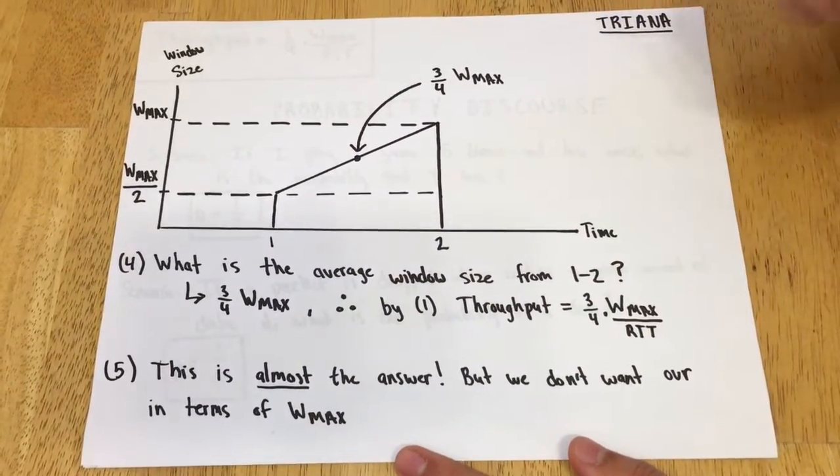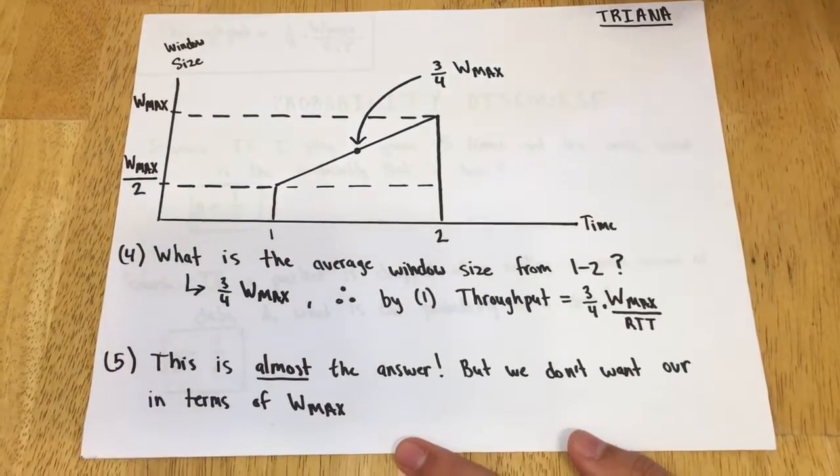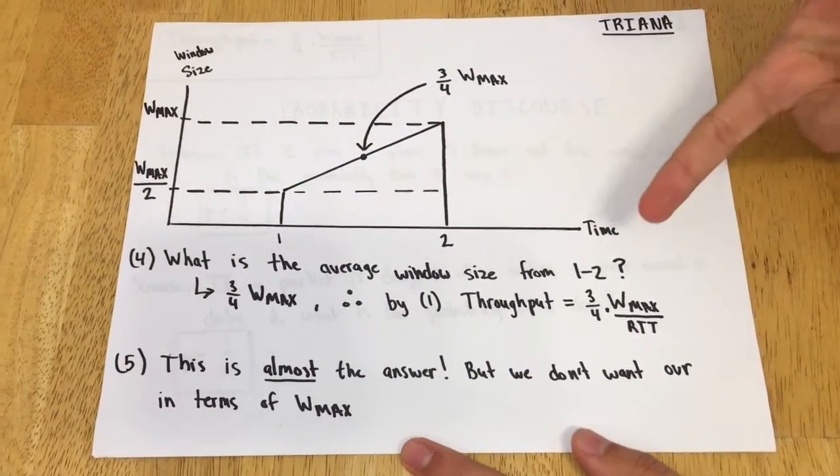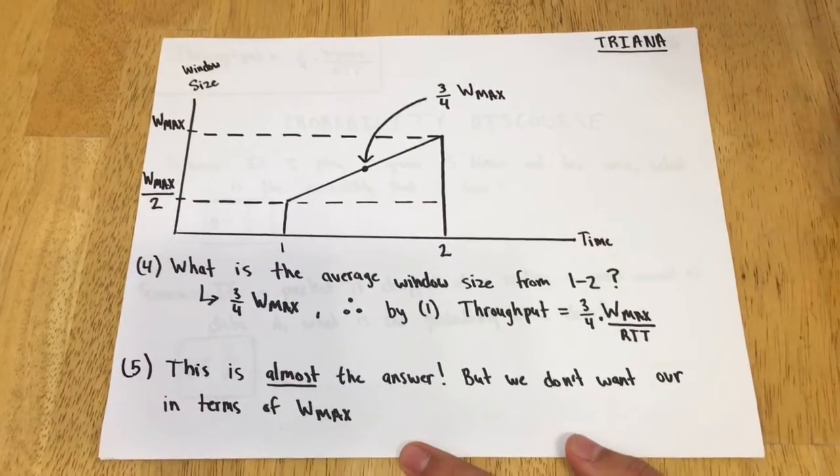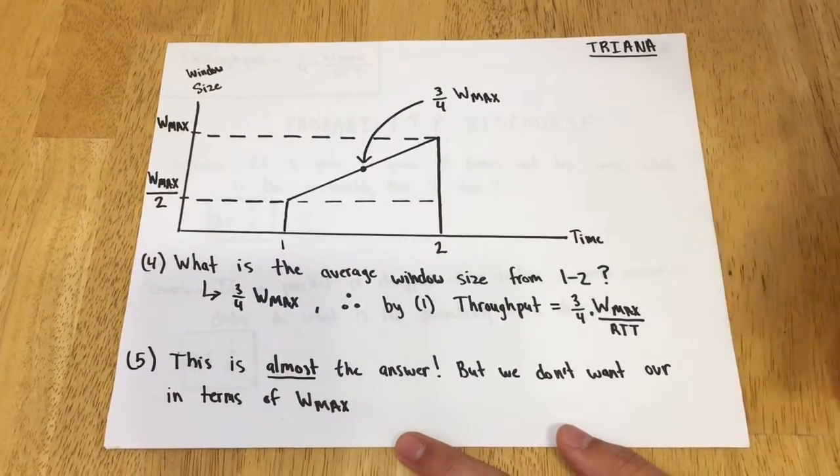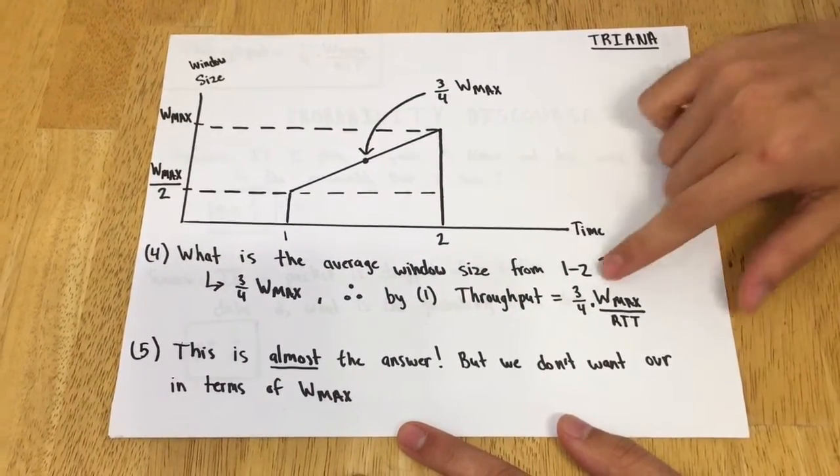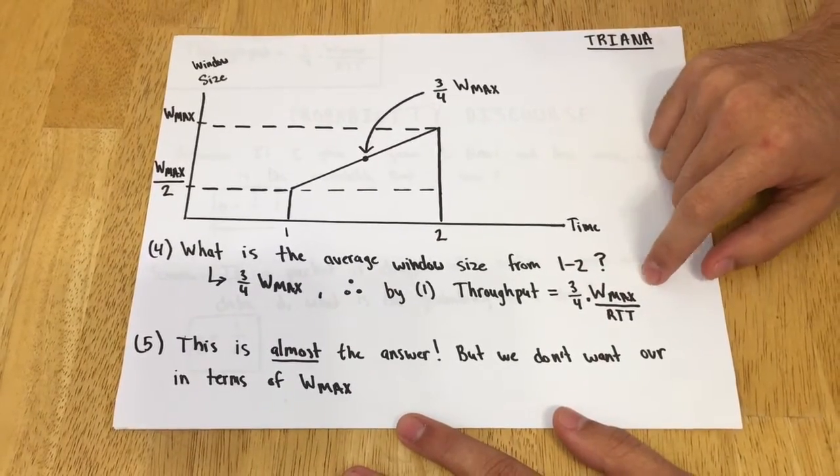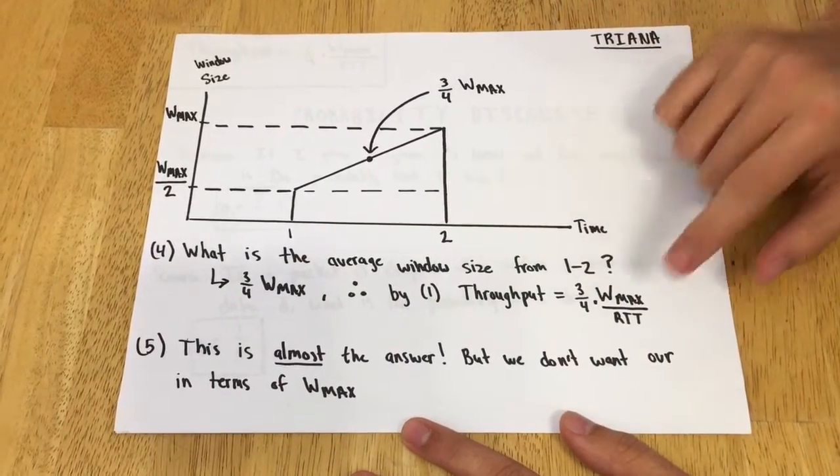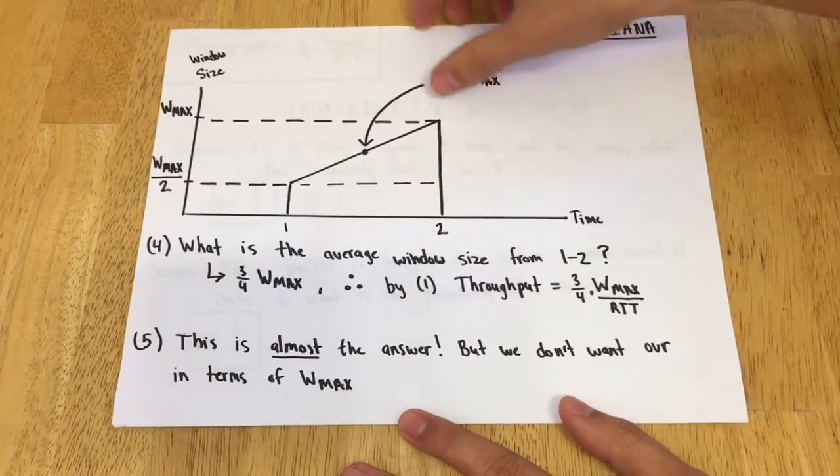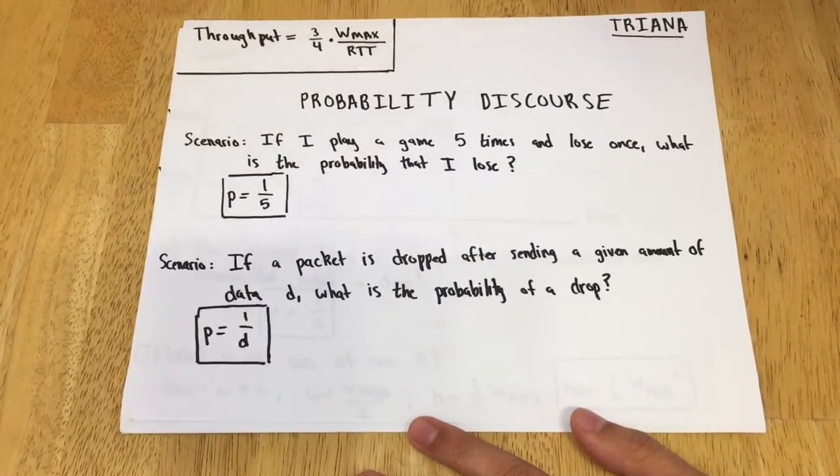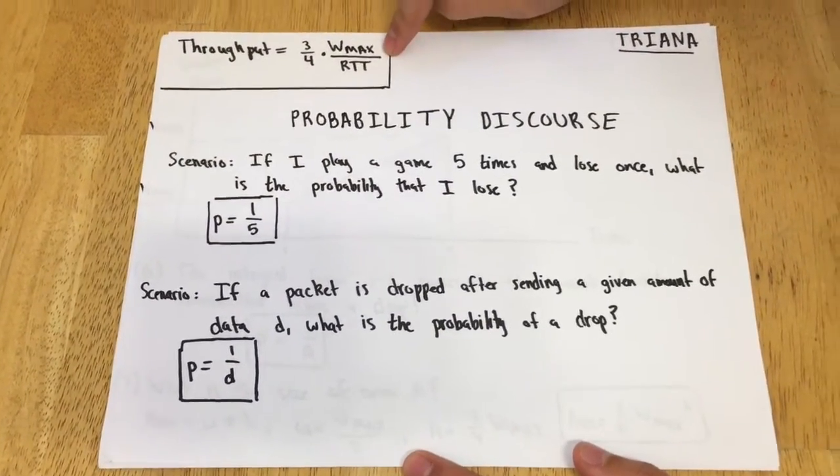That's really close to the answer, but not quite it. The issue is that our throughput is now expressed in this abstract quantity W_max, which is not what we want. So we're going to spend almost half the derivation finding a substitution for W_max. The substitution will deal with probabilities, so I want to review some basic probability with you.